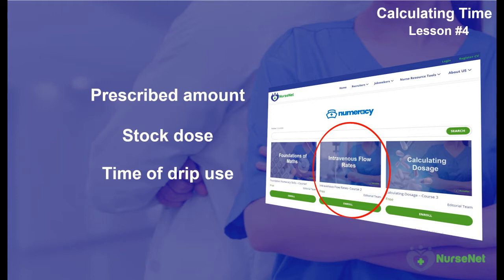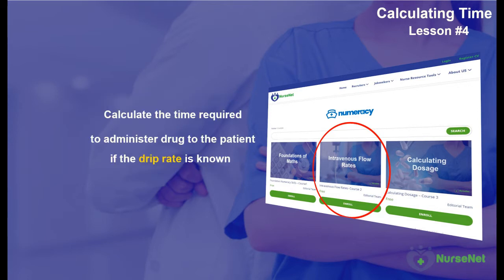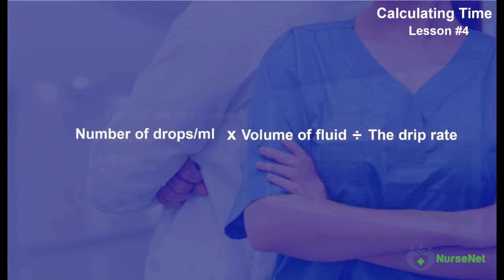In this lesson, we're going to calculate the total length of time a drip should be administered if we know the drip rate. To do this, we need to calculate the total number of drops per milliliter multiplied by the volume of the fluid, divided by the drip rate.